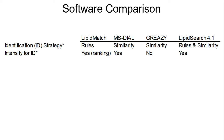For example, in LipidMatch, if you see the fatty acyl chains — for example, the neutral loss for phosphatidylcholines in positive mode and the 184 head group — you can identify it at the level of fatty acyl chains, such as PC16.0_18.1. On the other hand, if you see the 184 ion but do not see the fatty acyl fragments, then you can tentatively identify it as PC34.1, which is the sum composition of the carbons and unsaturations in the fatty acyl chains.